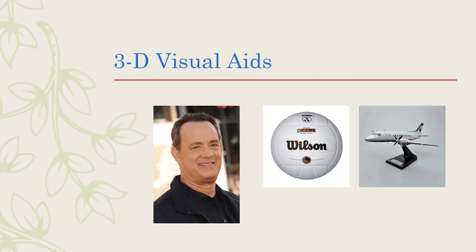The first type of visual aid that your textbook discusses are 3D visual aids. Three-dimensional visual aids include objects, models, or people — real tangible things that are going to showcase a part of your speech. You might bring in a person, you might use some sort of object. Maybe if it's about sports, you might bring in an object related to that sport, or you're talking about something where a model, like an airplane model, makes sense.